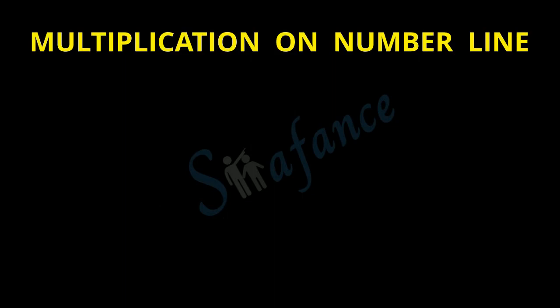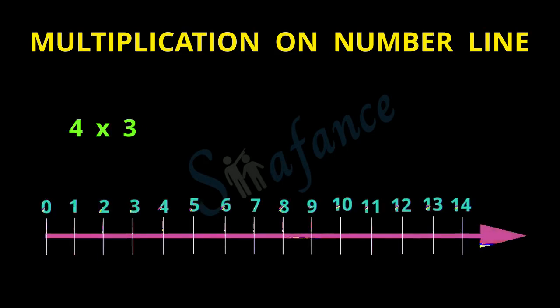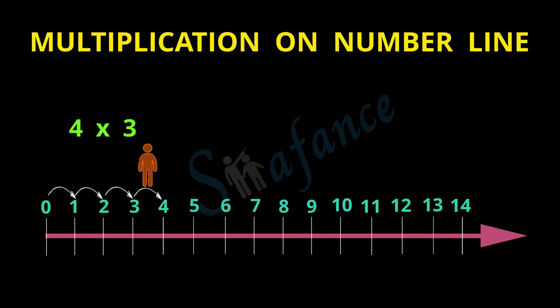Now we will take one more example and do 4 multiplied by 3. We will see this multiplication on the number line. Let us place the person at digit 0 on the number line, and now the person will travel 4 spaces — 1, 2, 3, and 4. Now the person is at digit 4.